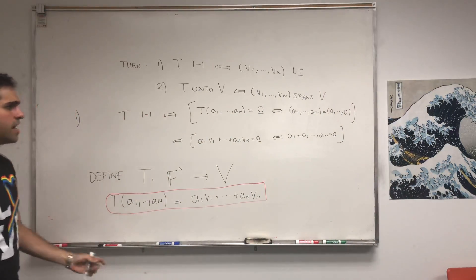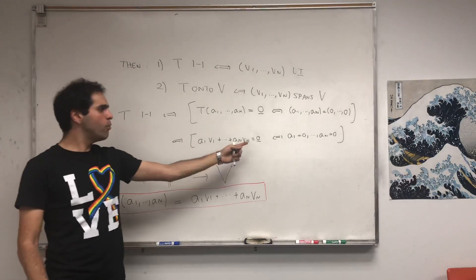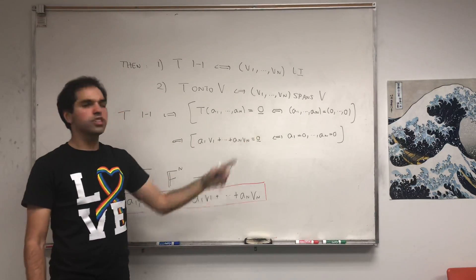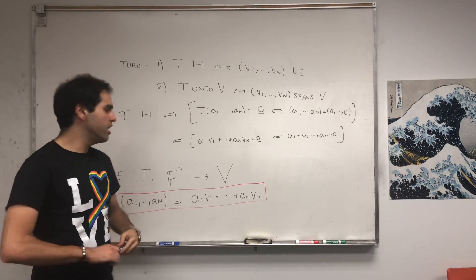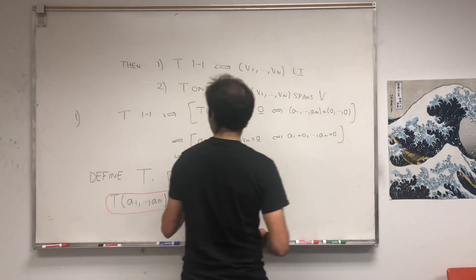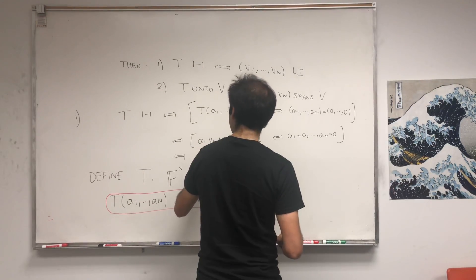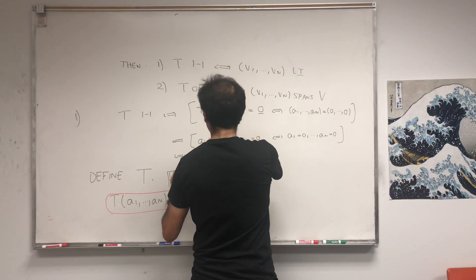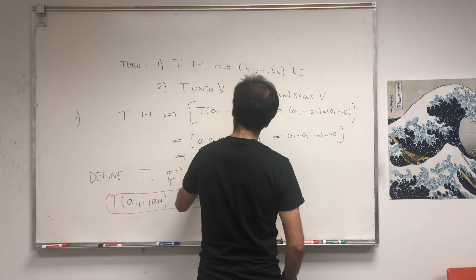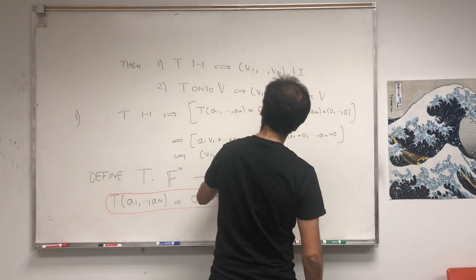But look, what is this saying? This is saying the only way a linear combination is 0 is if and only if we get the trivial linear combination. But that's the same thing as saying that this list, v1 up to vn, is linearly independent.